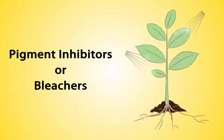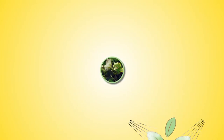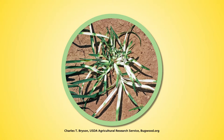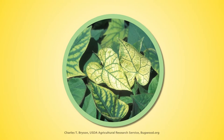Pigment inhibitors or bleachers are herbicides that cause the tissue of a plant to turn white after treatment. Examples include oxazolidinone, isoxazole, and trichotone. They interrupt the chlorophyll production in the plant, turning the plant tissue white and interrupting photosynthesis. The photosynthesis system can easily be damaged by sunlight without carotenoids.